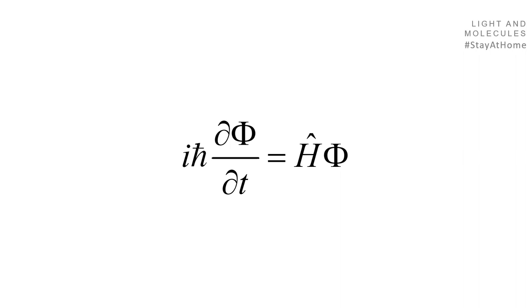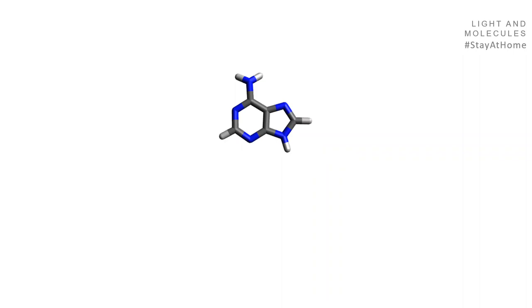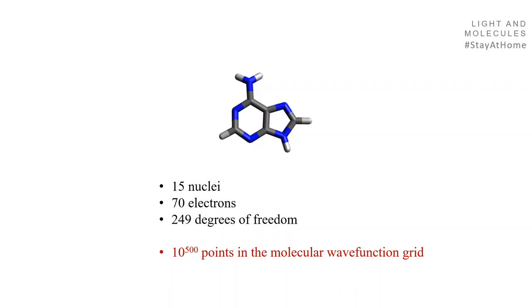We know how to model this system and this process — that's the time-dependent equation. But the problem is you just can't solve it. Take adenine, a small molecule: 15 nuclei, 70 electrons, 249 degrees of freedom considering all particles. If you make a grid with a few points per degree of freedom, that would be 10 to the power of 500 points to describe the molecular wave function. That's ridiculous. So how can you simulate such a process?